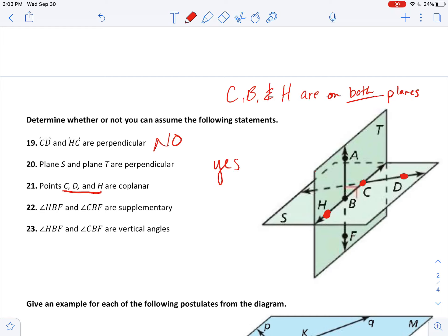So I'm asking you, C, B, and H, they're on both planes because they lie on that intersection line. So if they're on both planes, if they are on the horizontal plane and the vertical plane, are they on the horizontal plane? And the answer there is yes.